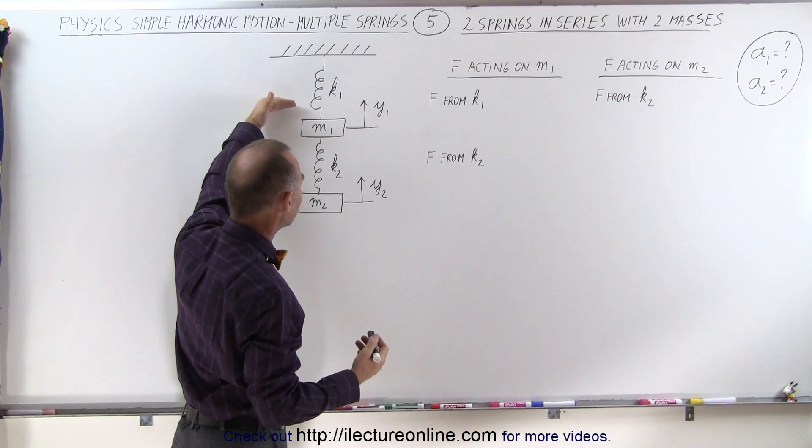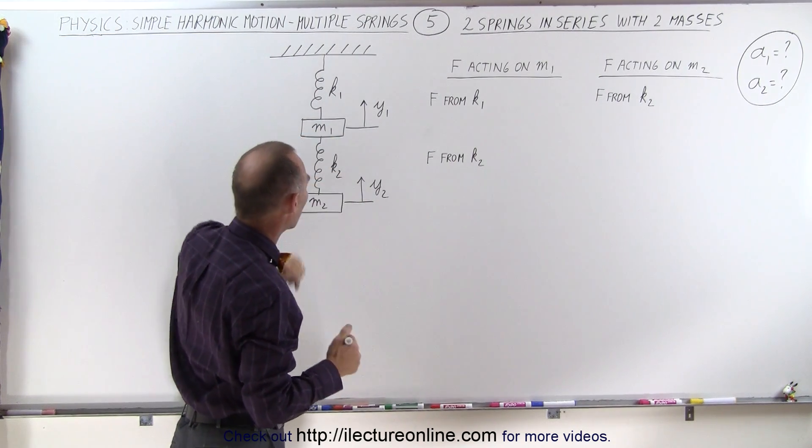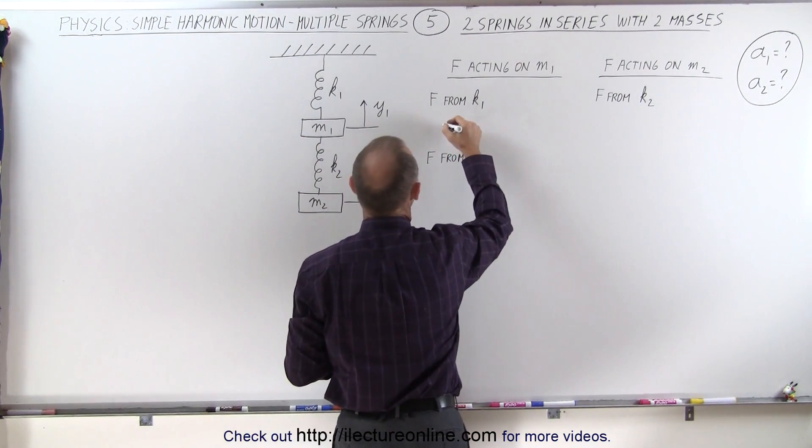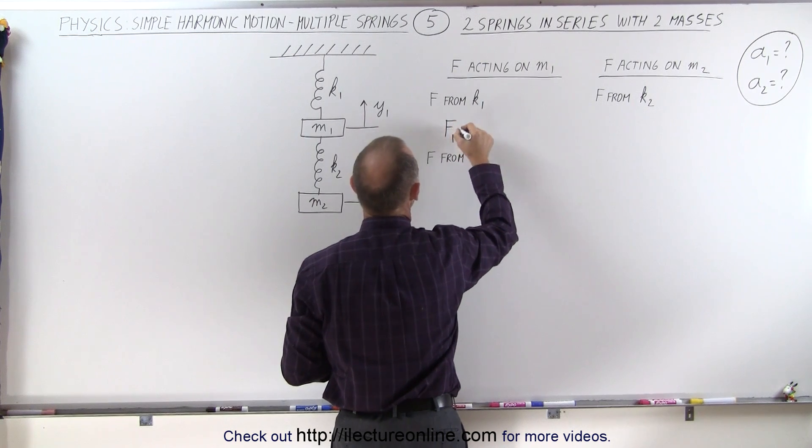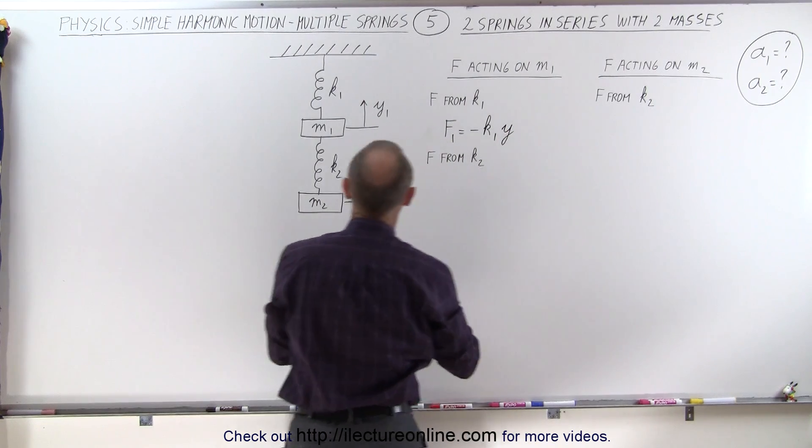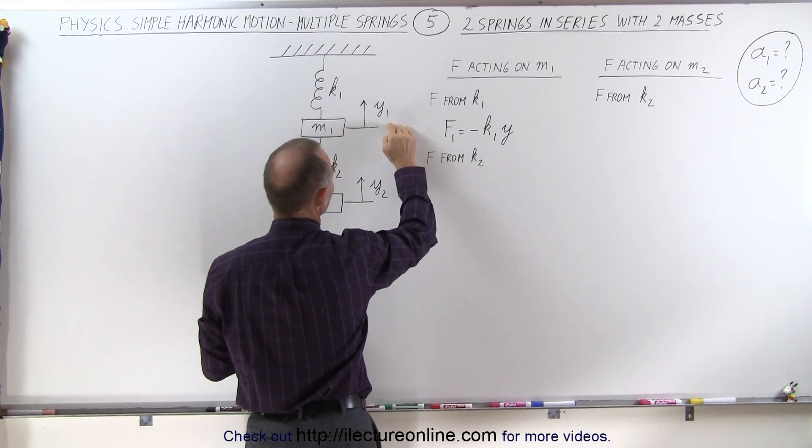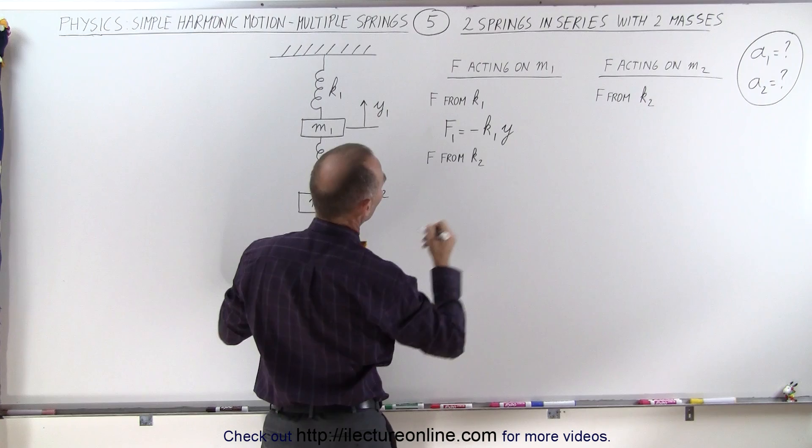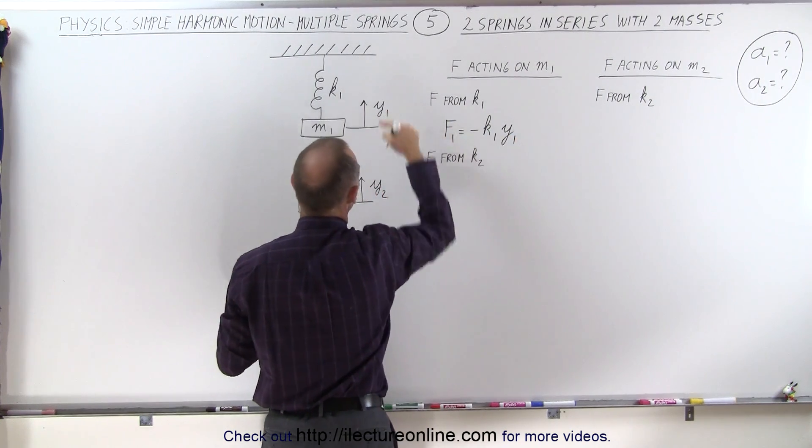For the first one, it's relatively easy because we can ignore what's below here. We can simply say that the force, and let's call it f1, is equal to minus k1 y1. So if y is positive, and I guess I should call it y1 because I'm dealing with this variable right here.